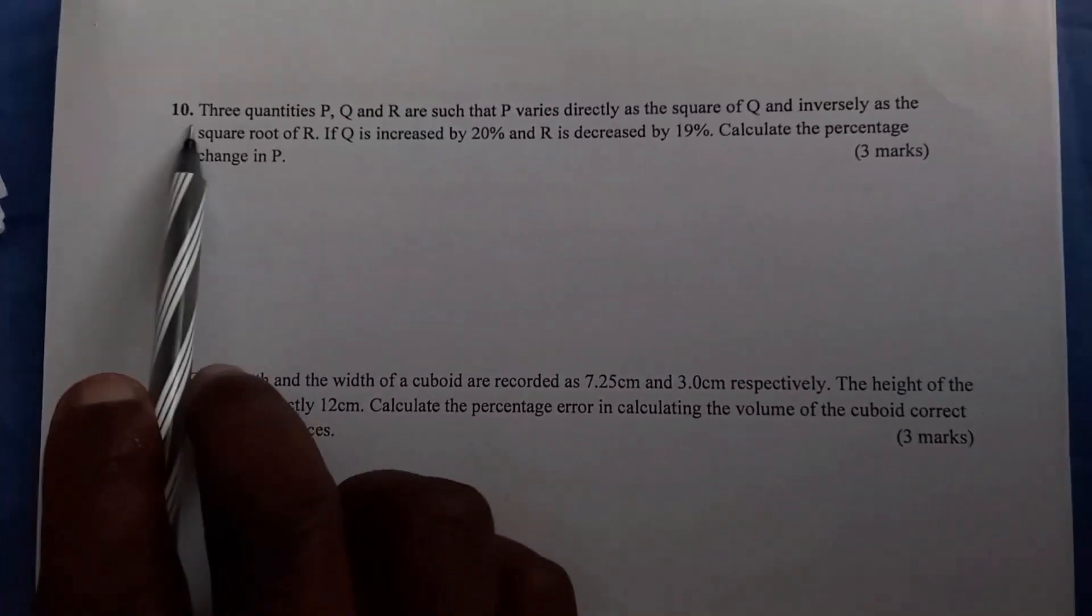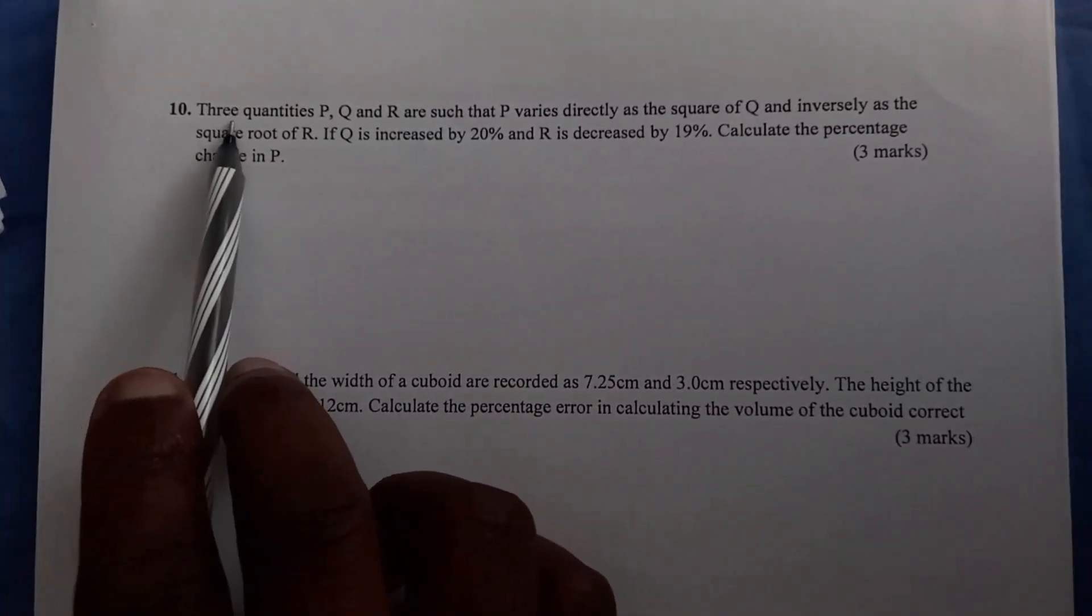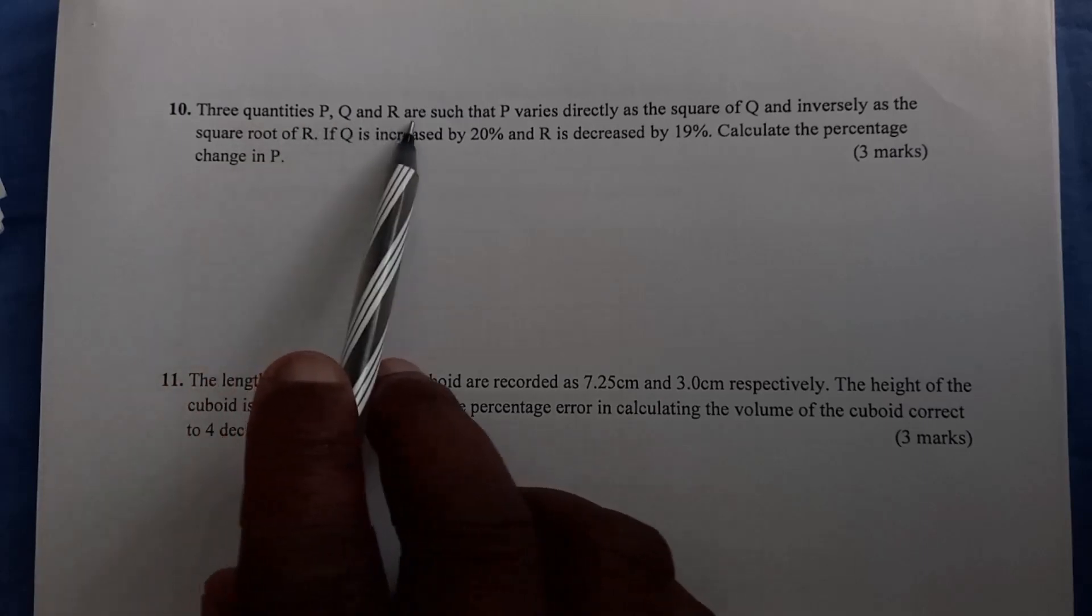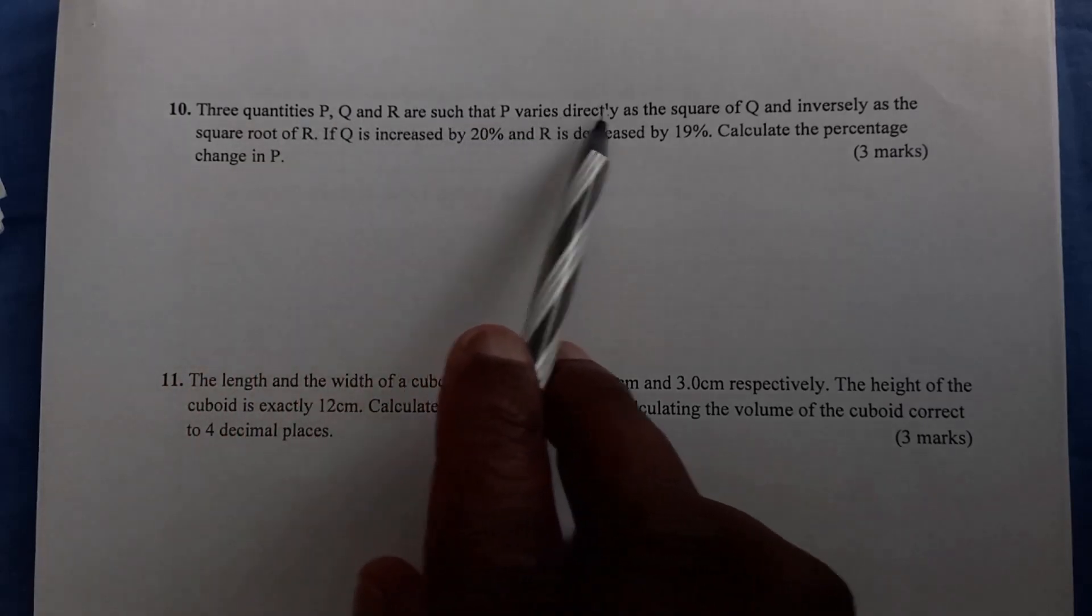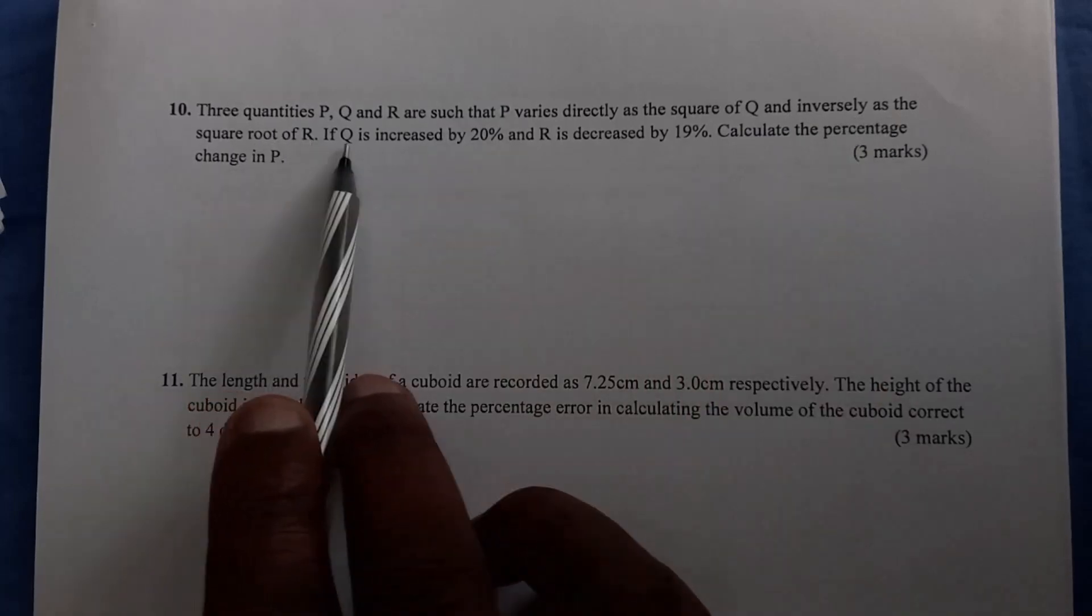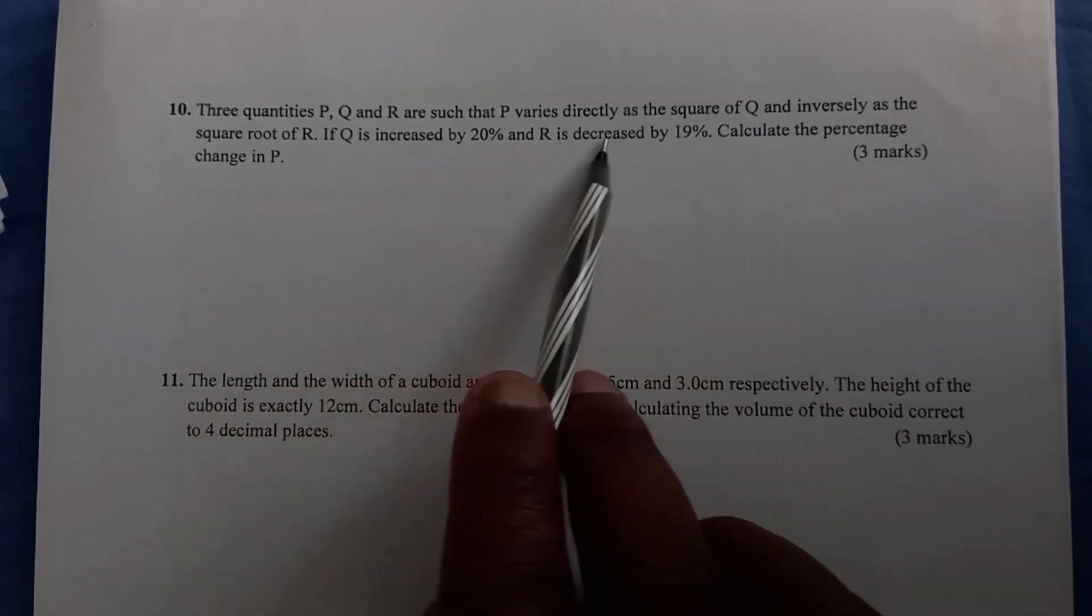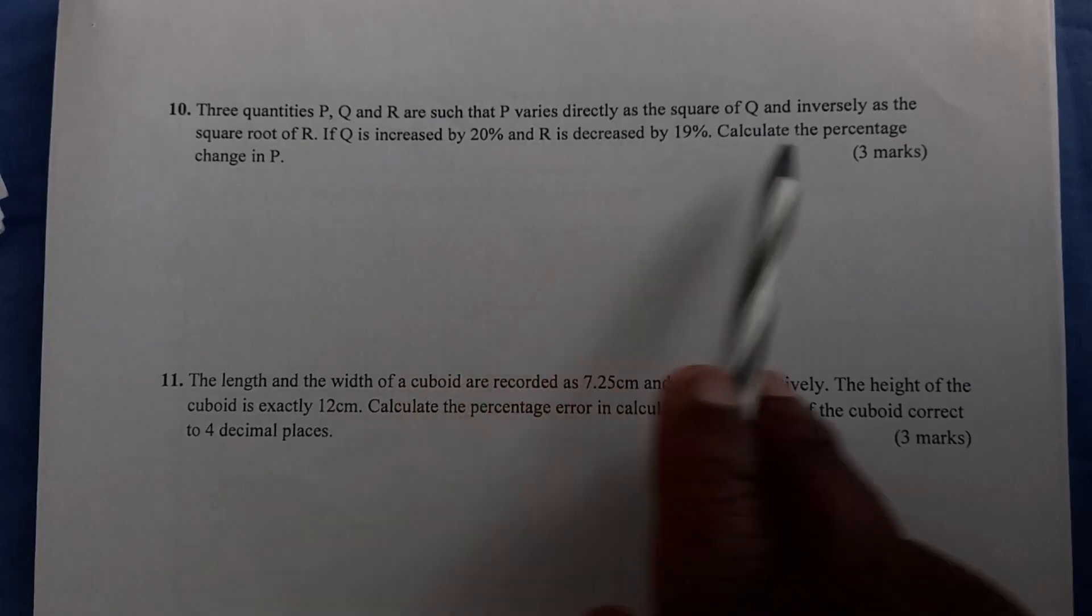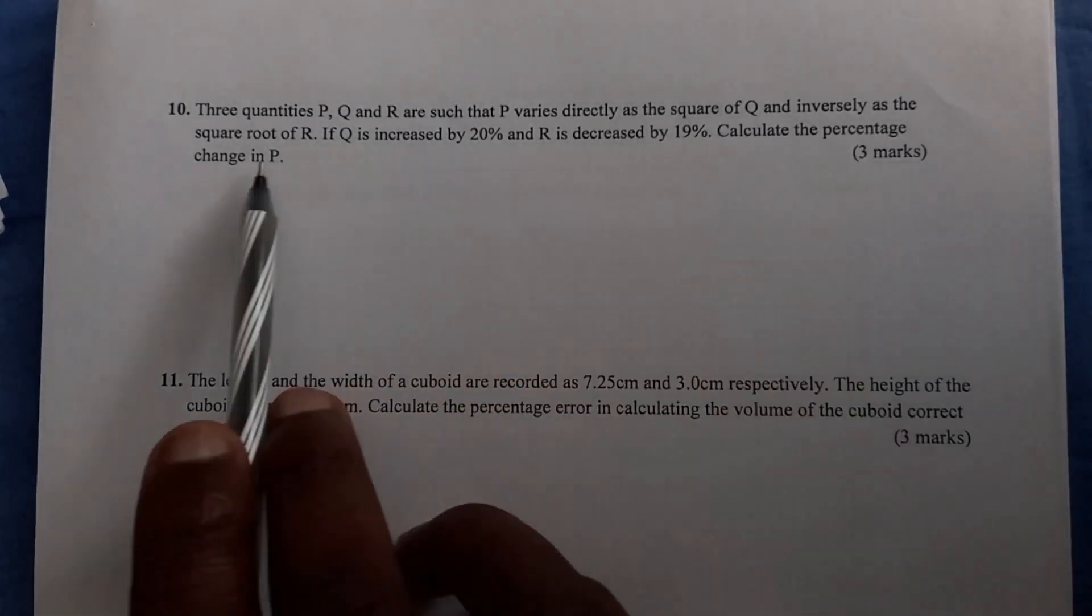Let's work on question number 10, a question on variation. Three quantities P, Q, and R are such that P varies directly as the square of Q and inversely as the square root of R. If Q is increased by 20% and R is decreased by 19%, calculate the percentage change in P.